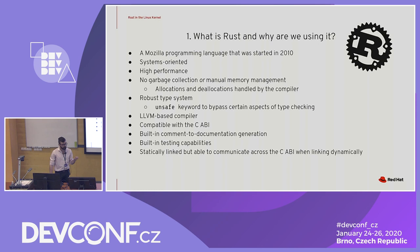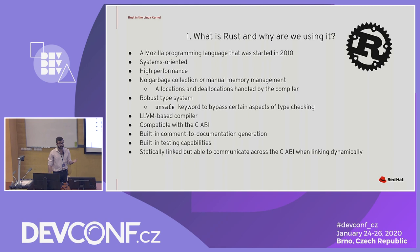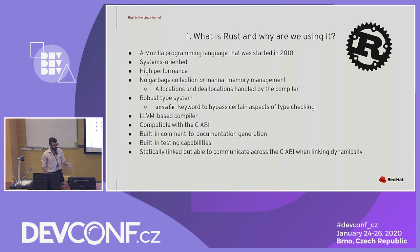What is Rust and why are we using it? Rust tends to be a highly systems-oriented programming language — very high performance. Despite being a relatively new language started around 2010, it's made a lot of headway. We get really nice benefits like no garbage collection or manual memory management; allocations and deallocations are handled by the compiler. It has a robust type system, uses the unsafe keyword to opt out of stricter security checks, and it's LLVM-based, giving you really nice optimizations. Together with an existing ecosystem of out-of-the-box documentation and built-in testing capabilities, it's a really attractive option.